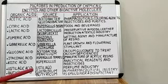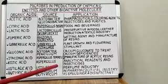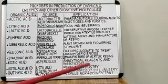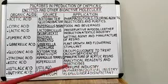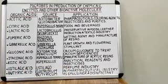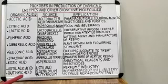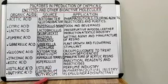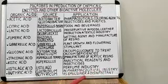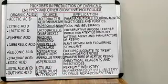Kojic acid is obtained from Aspergillus and is used as an analytical agent and insecticide. Ustilagic acid is obtained from Ustilago and is used in the perfume industry. Butyric acid is obtained from Clostridium butyricum bacteria and is used in the pharmaceutical industry as an emulsifier and as a disinfectant.